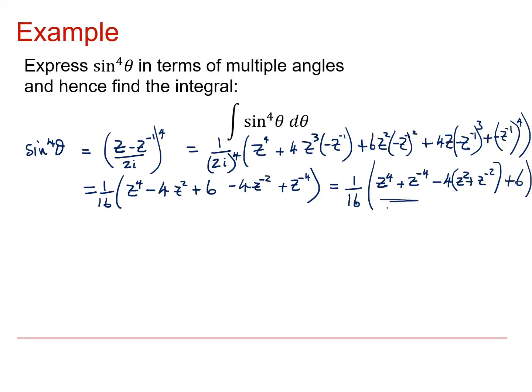Now this thing here is just 2 cos 4 theta. And this thing here is just 2 cos 2 theta. So sin to the power 4 becomes 1 over 16 times 2 cos 4 theta minus 8 cos 2 theta plus 6.